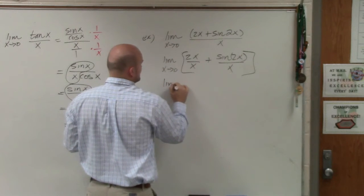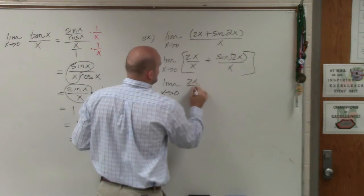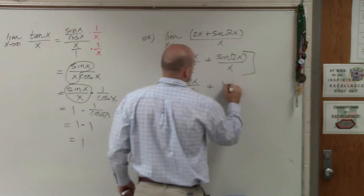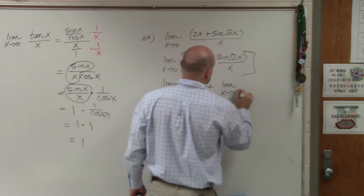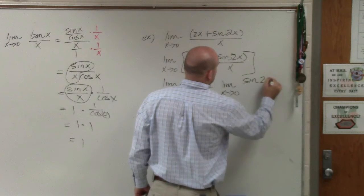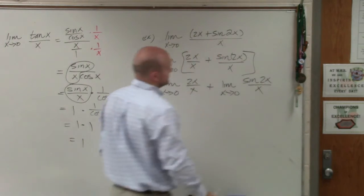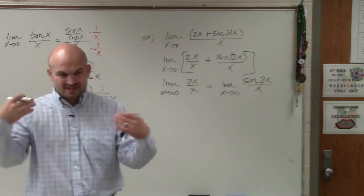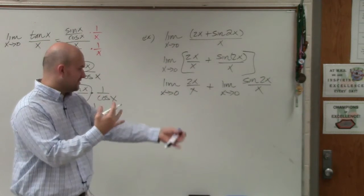That's the same thing as me saying the limit as x approaches 0 of 2x over x plus the limit as x approaches 0 of sine of 2x over x. So that's helpful, because now we can focus our attention on one function and then on the other function.